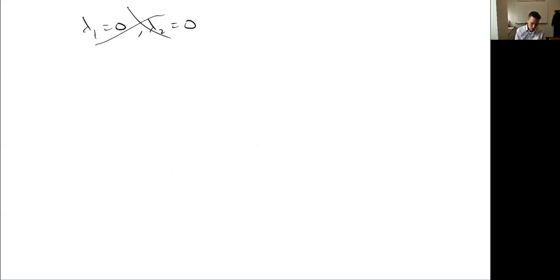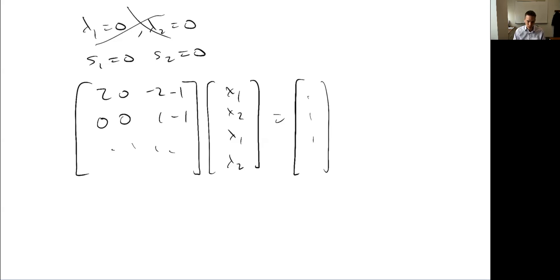Let's say they're both active. S1 is 0, S2 is 0. So then we get a 4 by 4. I'll just show this one. So if I take S1 and S2 equals 0, the variables I have remaining are x1, x2, lambda 1, lambda 2. And the equations I have remaining 2, 0, minus 2, minus 1, 0, 0, 1, minus 1, and then the others. I'm not going to fill it all out here. And I can solve it.